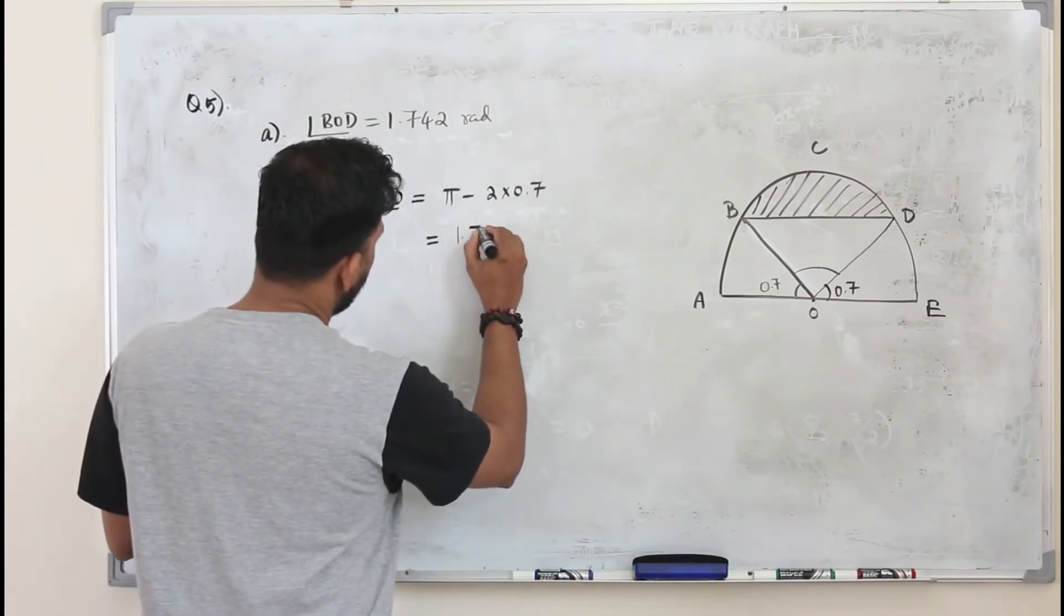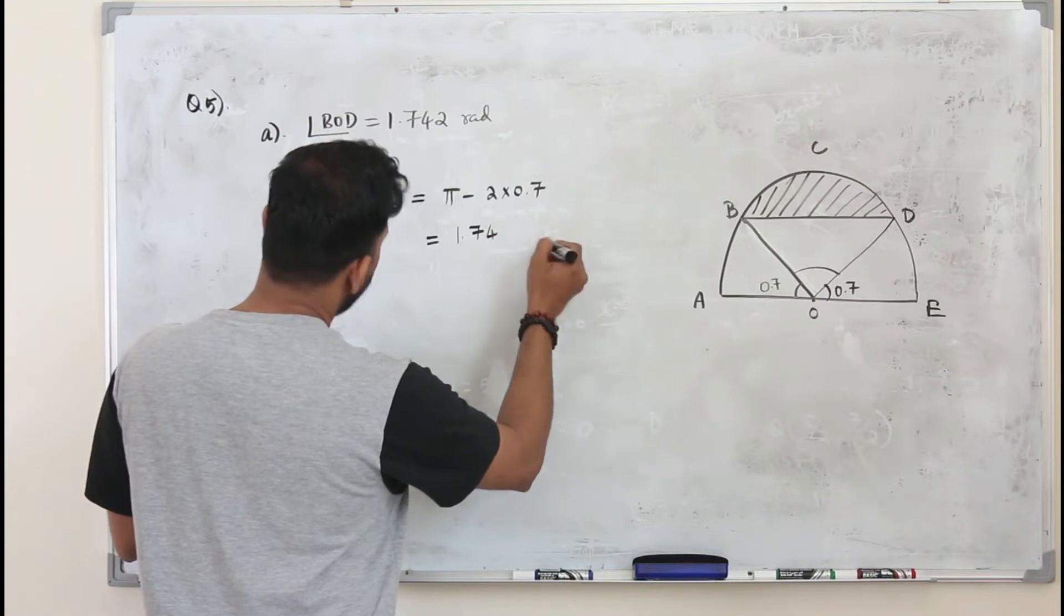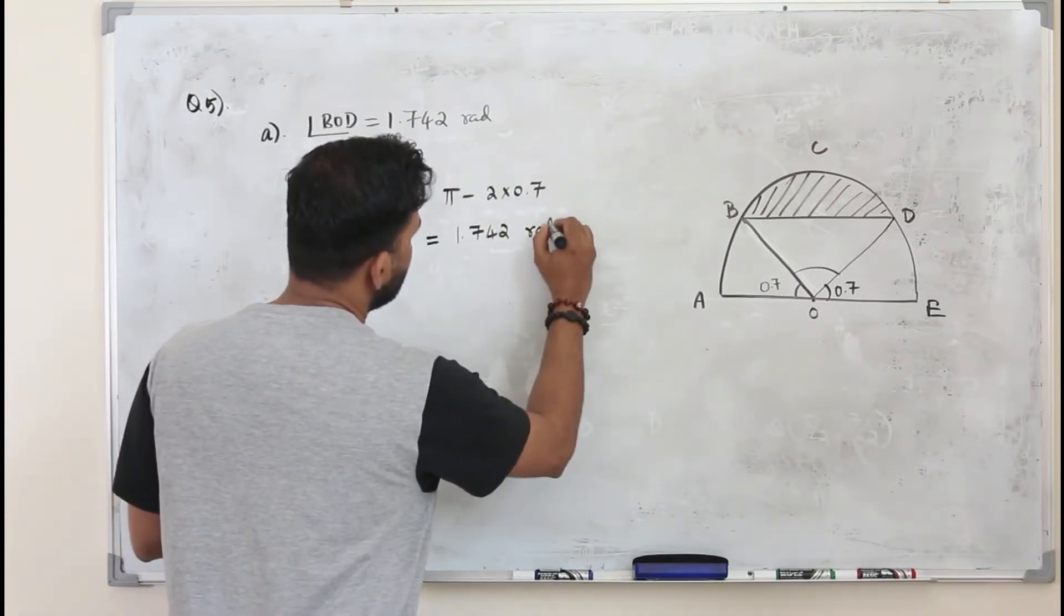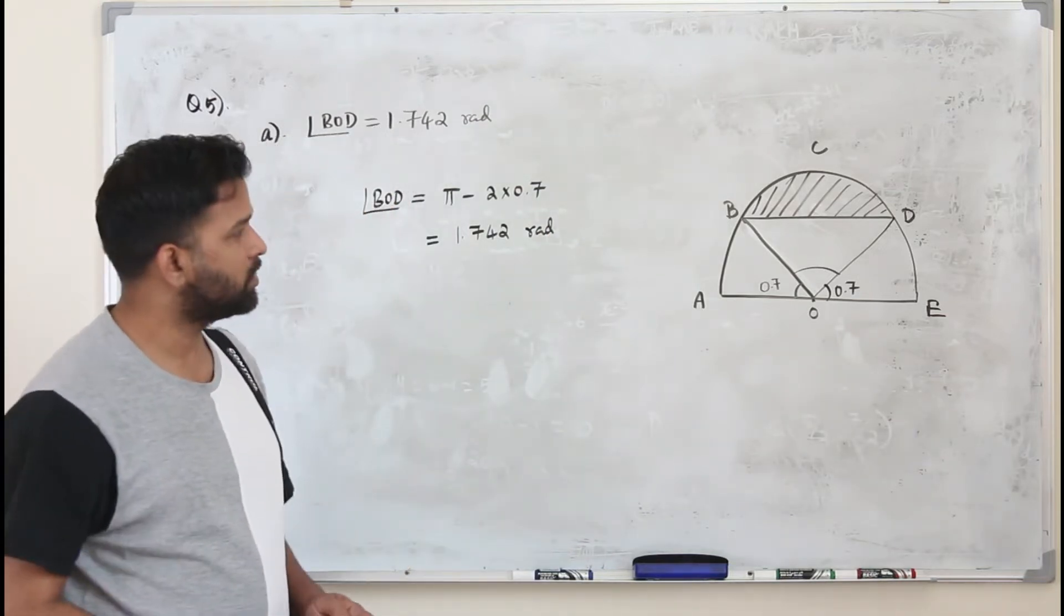It's 1.7415 which is 1.742 to 3 decimal places. Let's see. We got the answer already.